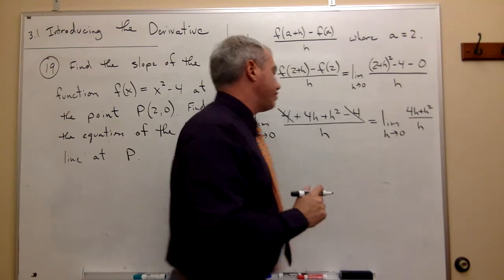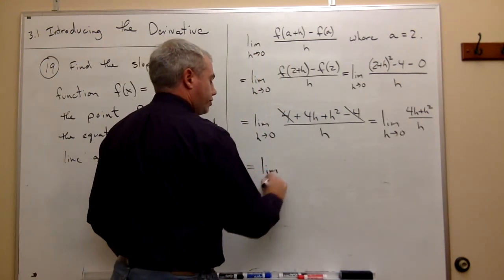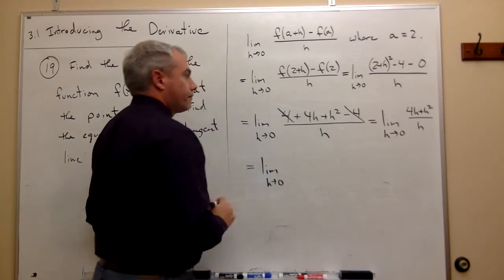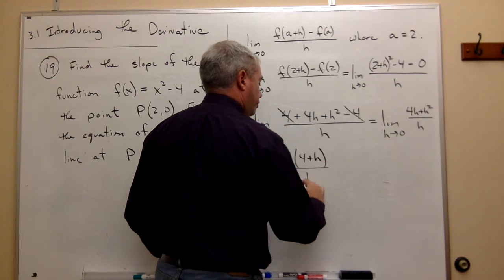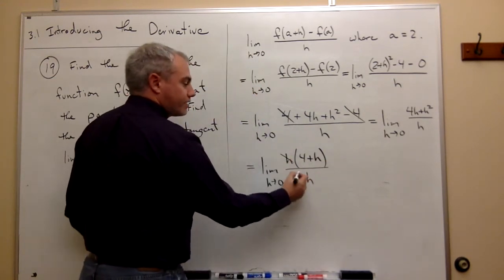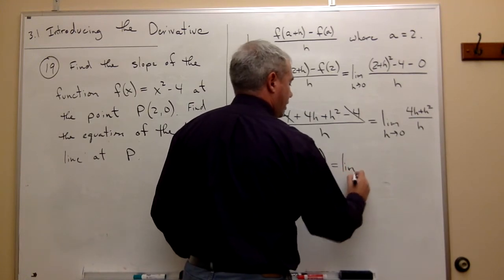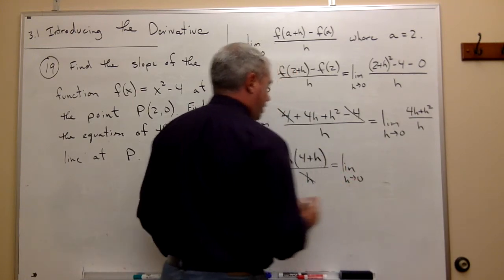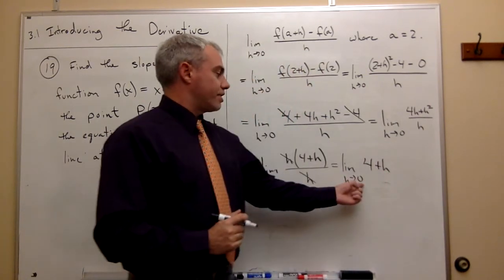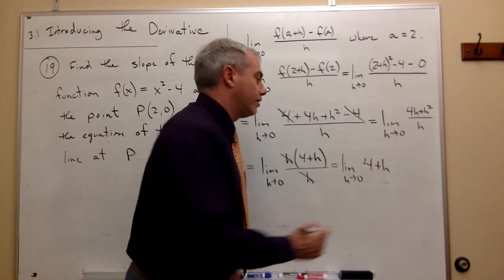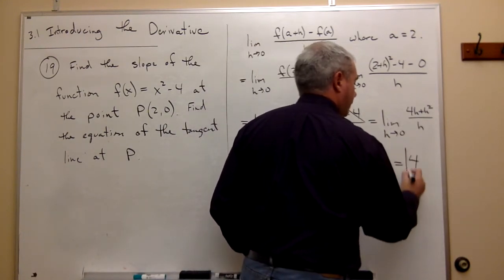Everything on the top has an h in it, so I can factor out an h. I get h(4 + h) / h. The h's cancel, and I'm just left with the limit as h goes to 0 of 4 + h. As h goes to 0, we're just left with 4.